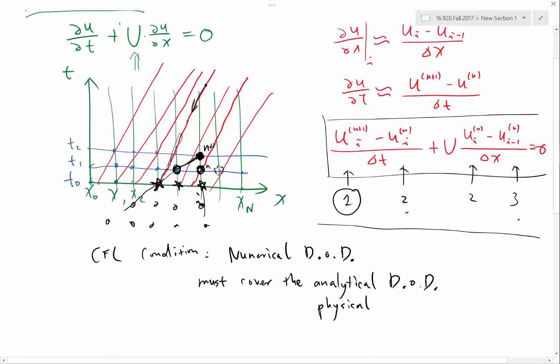But how is the value at this open circle computed? It is computed according to the same scheme, except n+1 is replaced by n and n is replaced by n-1, which means this value is computed from these two values. And this value, which is the same scheme but n is replaced by n-1, so n+1 replaced by n, n replaced by n-1, and also i replaced by i-1, i-1 replaced by i-2.